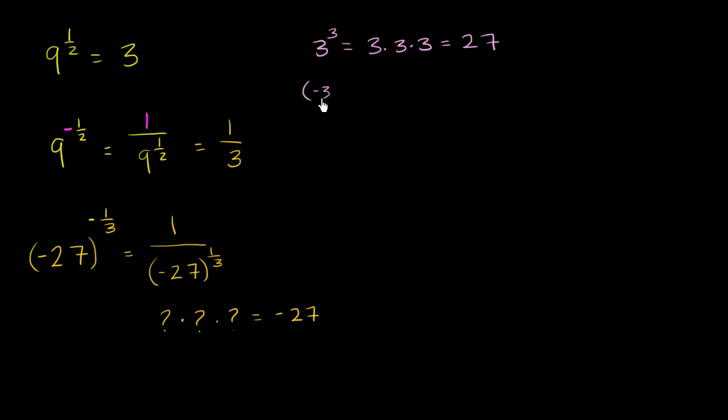What would negative 3 to the third power be? Well, that's negative 3 times negative 3 times negative 3, which is negative 3 times negative 3 is positive 9, times negative 3 is negative 27. So we just found this number, this question mark. Negative 3 times negative 3 times negative 3 is equal to negative 27.